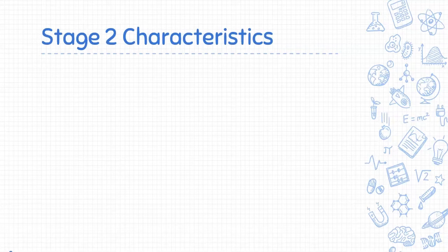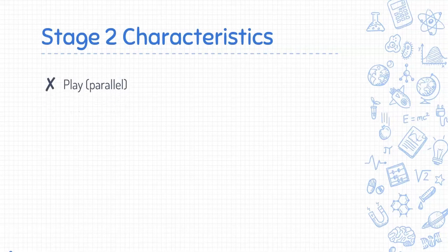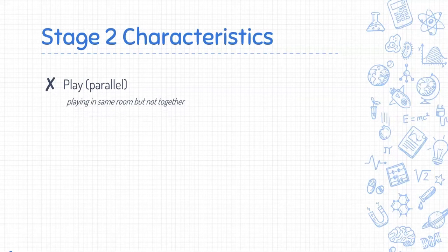Children develop several characteristics that Piaget claims showcase their development from Stage 1 and lead to further development in Stage 3. These characteristics include parallel play, one of the first characteristics noted in this stage. Children begin to move and discover the world around them, and while they begin interacting with their surroundings and other people or children, we often might find them playing in a classroom full of children, yet still playing alone, not always engaging with their peers and their actions.